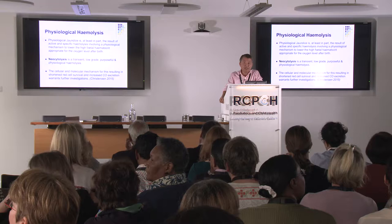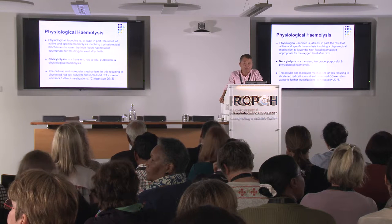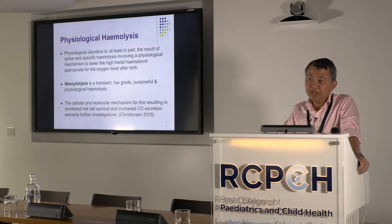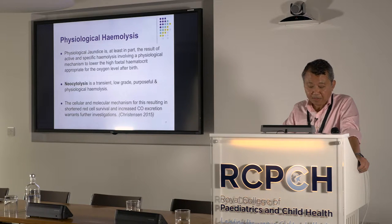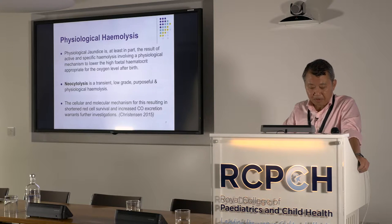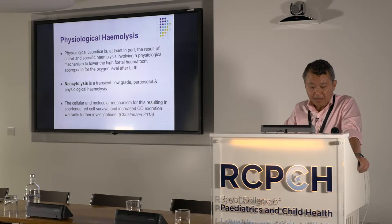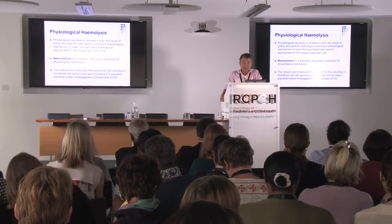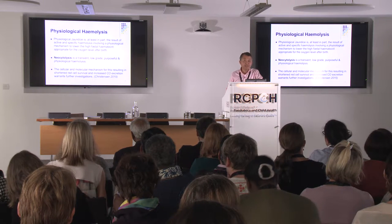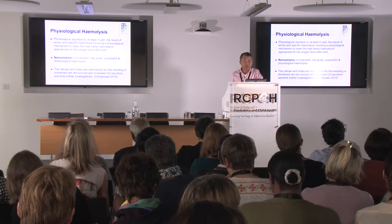I'm going to suggest a term: these babies either have pathological haemolysis — as we understand in ABO, Rhesus, G6PD and so on — but they also have what every newborn baby will have, which is physiological haemolysis. This is at least in part the result of active and specific haemolysis involving a physiological mechanism to lower the high fetal haematocrit, which was needed for the relatively intrauterine hypoxic environment, transitioning to a higher oxygen level after birth. Dr. Christensen and others describe this as neocytolysis — a transient, low-grade, purposeful, and physiological haemolysis. The question I'll put to you later is whether tests like ETCO can indicate not only pathological but also extreme forms of physiological haemolysis.